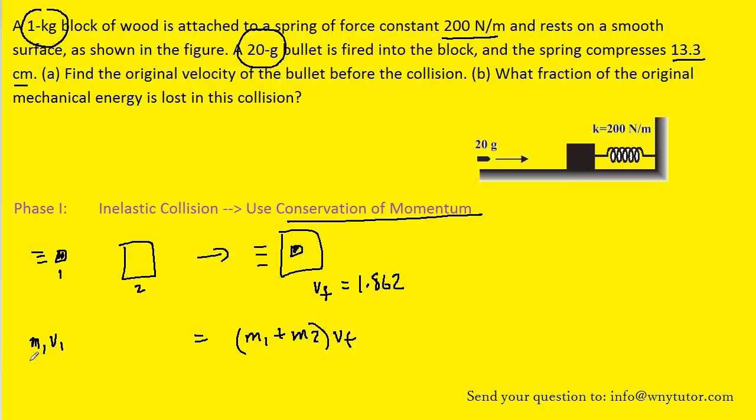And then if we divide by m1, which is the mass of the bullet, we're going to be able to solve for the initial velocity of the bullet, which is exactly what we're looking for in part A. Note again that the final velocity was the 1.862 meters per second that we had found earlier. And the masses were also known, so let's plug in. And when you simplify that on your calculator, you should get approximately 95 meters per second. So that will represent the initial speed of the bullet.